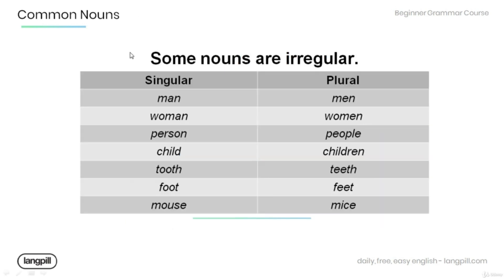Some nouns are irregular and don't follow standard plural rules. For example: man → men, woman → women, person → people, child → children, tooth → teeth, foot → feet, mouse → mice.